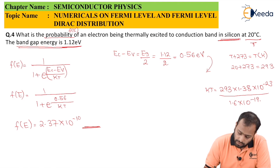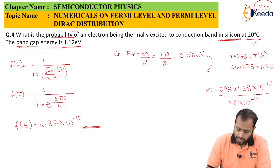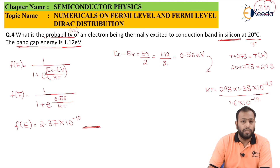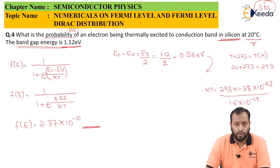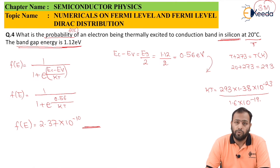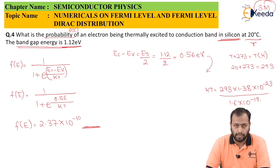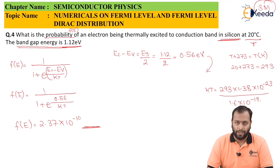As you can see, numericals on Fermi level and Fermi-Dirac distribution are very simple and they fetch you a lot of marks. There are only two types of questions asked, which we have covered in this class. Thank you.